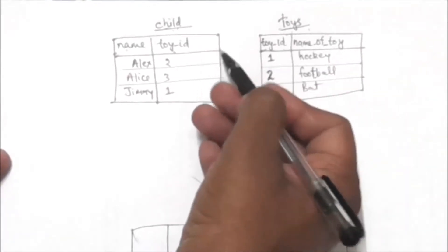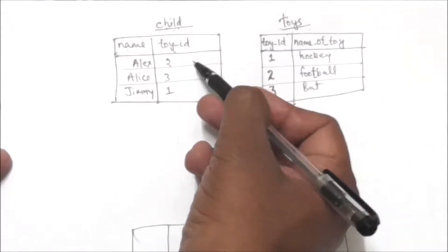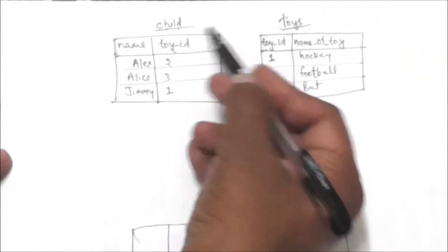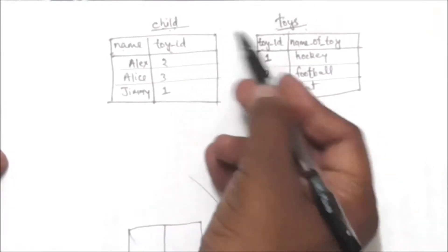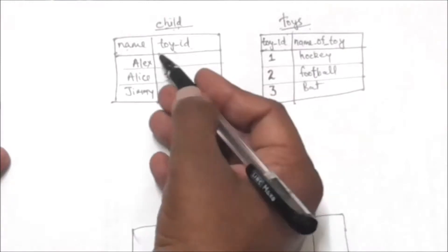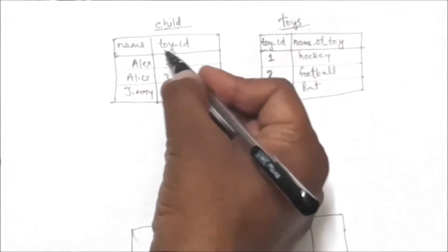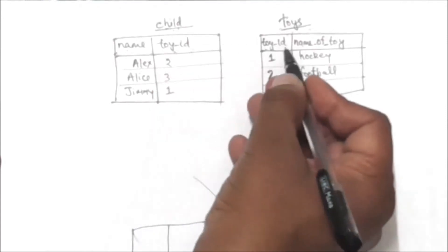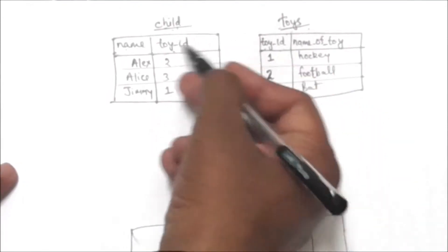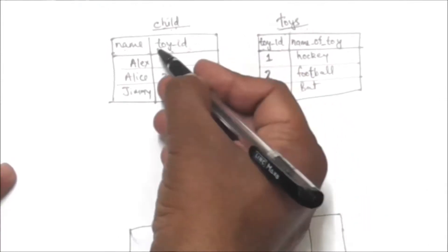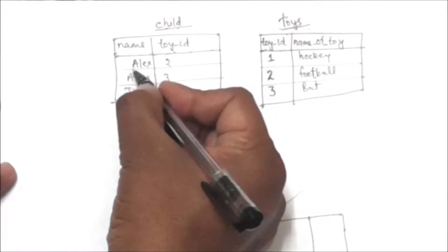Now I have to perform a natural join. Natural join only works if there is a common column — a column which has the same name in both tables. Here, see this column toy_id. This column name is present in both tables, so these two tables will be joined by this column toy_id.